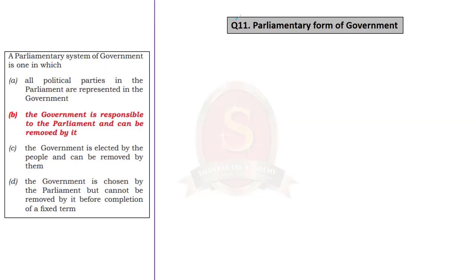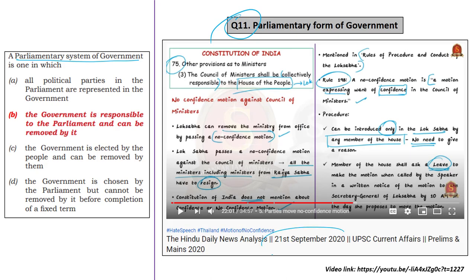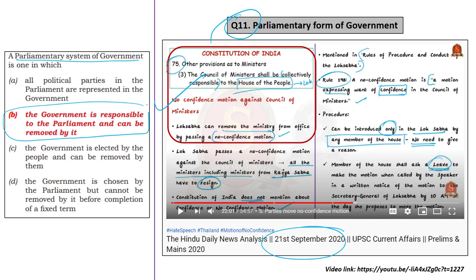The 11th question in Set A is about one of the features of parliamentary form of government. The entire theme of the question is in terms of collective responsibility and removal of the government from office by passing a no-confidence motion. These aspects we already discussed on 21st September 2020 in the News Analysis. So we can easily arrive at the correct answer, Option B — which is: the government is responsible to the parliament and can be removed by it. Note that in the Indian parliamentary system, the term 'parliament' here effectively refers to Lok Sabha.